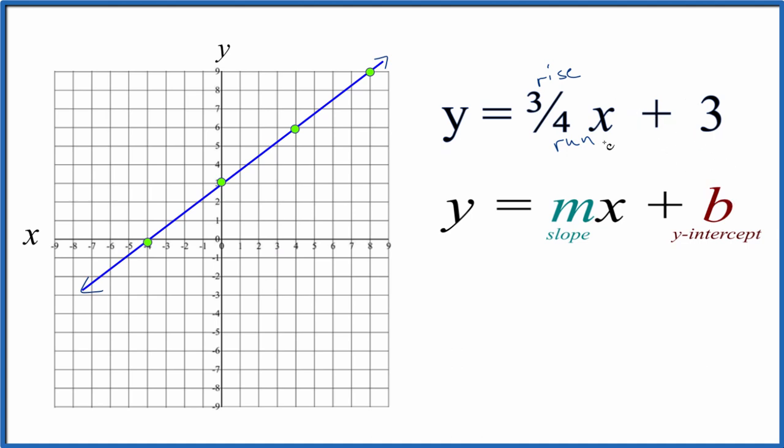Note, you could put a value in for x, calculate this side, so then you'd have y and x, and if you plotted that point, it would be on this line somewhere.